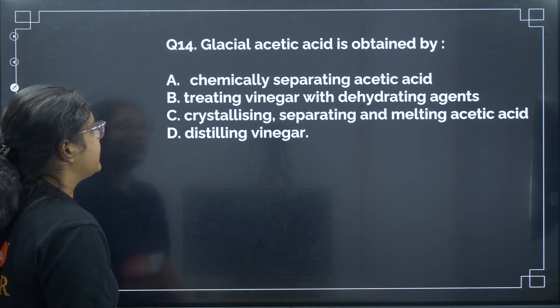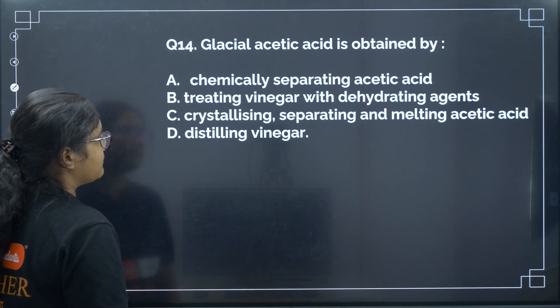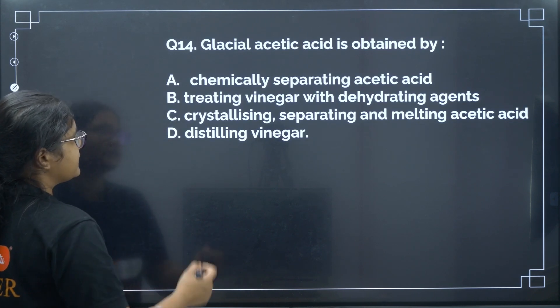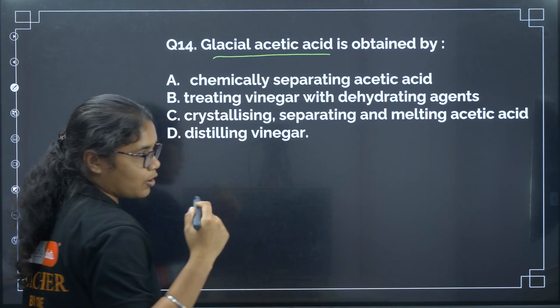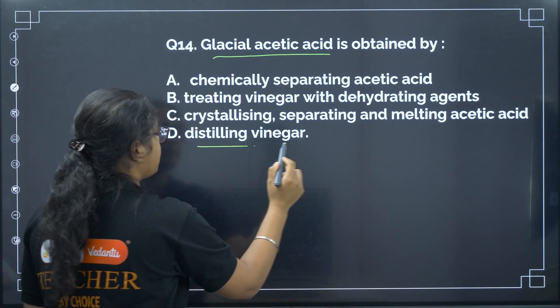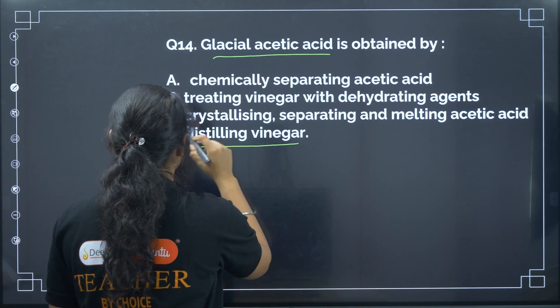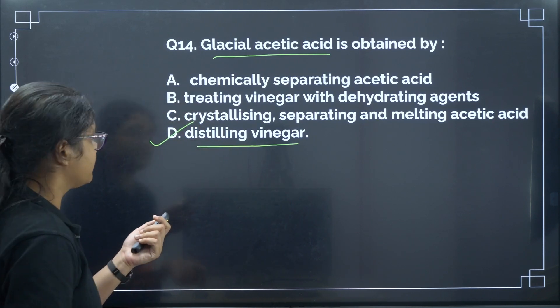Next: glacial acetic acid is obtained by? Glacial acetic acid is a common name for pure acetic acid and it is obtained by distilling vinegar. Correct answer: option D.